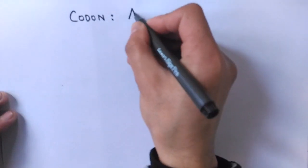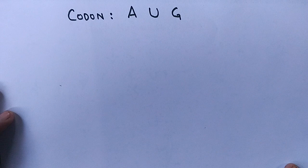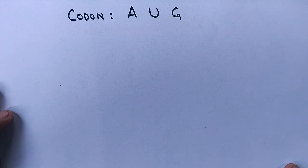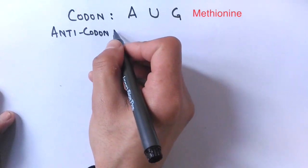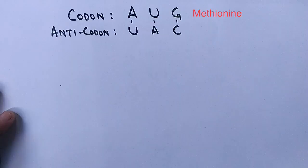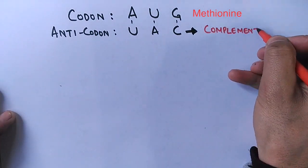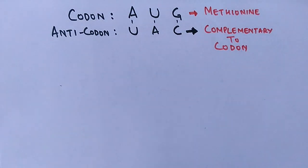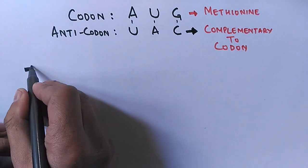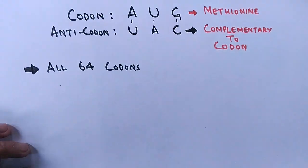For example, the codon AUG — adenine, uracil, guanine — is a three-nucleotide sequence that codes for methionine and also serves as the initiation codon. For this codon, the anticodon sequence on tRNA must be UAC, because UAC is the complementary sequence to AUG. This anticodon sequence is present on tRNA molecules.